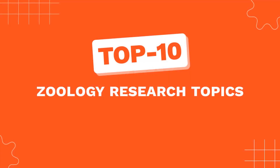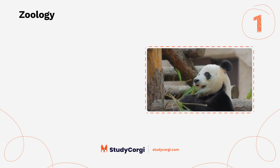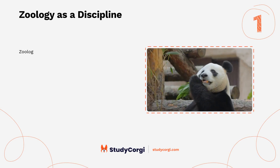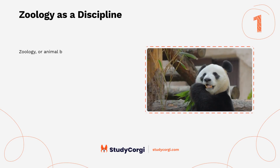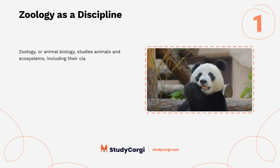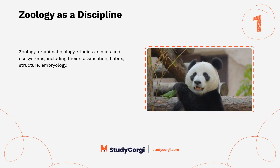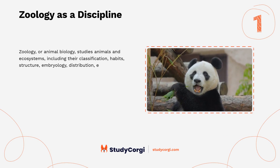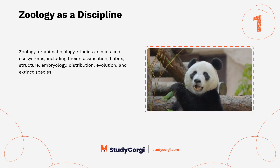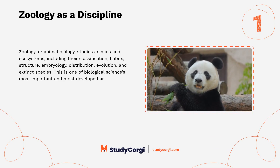Top 10 Zoology Research Topics. Zoology, or animal biology, studies animals and ecosystems, including their classification, habits, structure, embryology, distribution, evolution, and extinct species. This is one of biological science's most important and most developed areas.